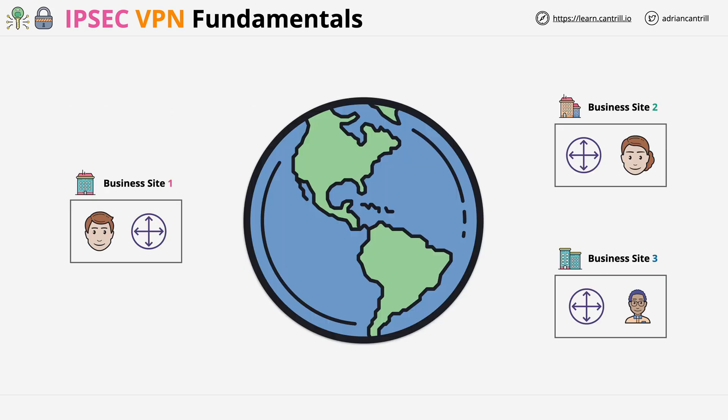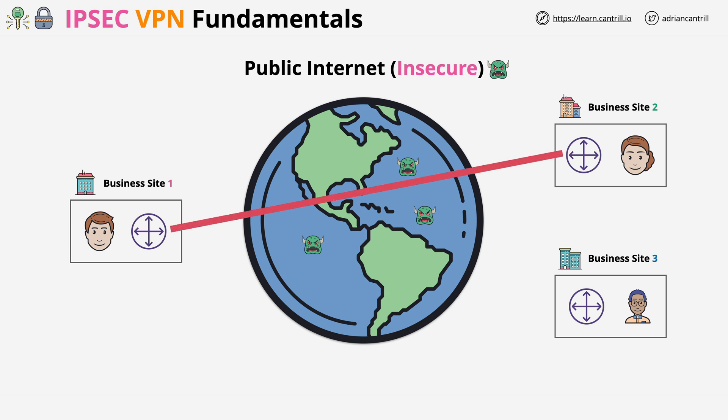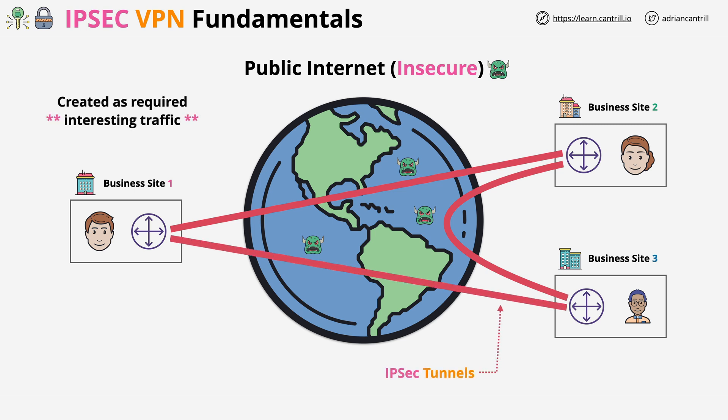Architecturally, we have the public internet — an insecure network full of goblins looking to steal your data. Over this insecure network, we create IPsec tunnels between peers. These tunnels exist as they're required. Within IPsec VPNs, there's the concept of interesting traffic — traffic which matches certain rules, based on network prefixes or more complex traffic types. If data matches any of those rules, it's classified as interesting traffic, and a VPN tunnel is created to carry it to its destination.